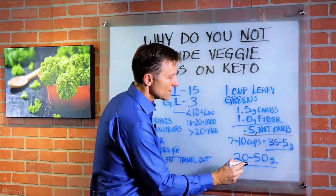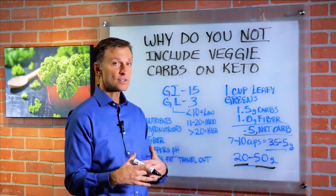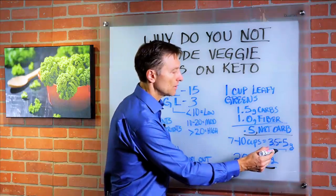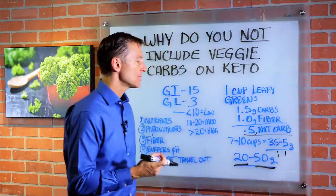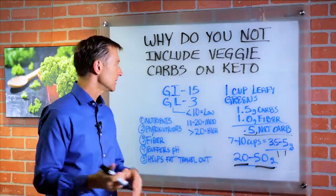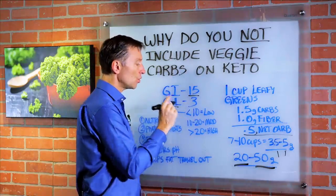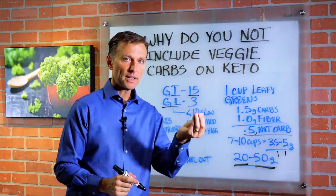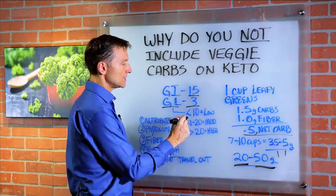You're allowed 20 to 50 grams of carbs on keto, and your huge salad that provides a lot of benefit is only going to account for 3.5 to 5 grams — just a very small amount. The glycemic index for a green salad is very small; it's 15. The glycemic load, which is basically the amount of carbohydrate minus the fiber, is 3.